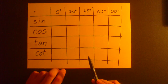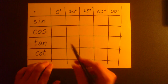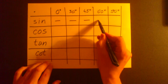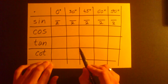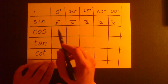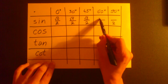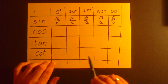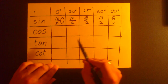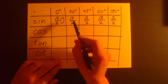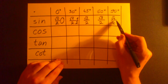In the sine row we will put fractions with number 2 as denominator, and we will put square roots of 0, 1, 2, 3 and 4. So what we get: that value is 0, that value is one-half, and that value is 1.